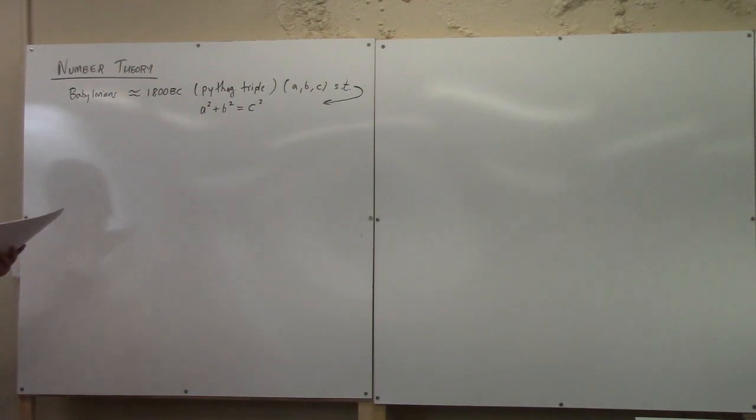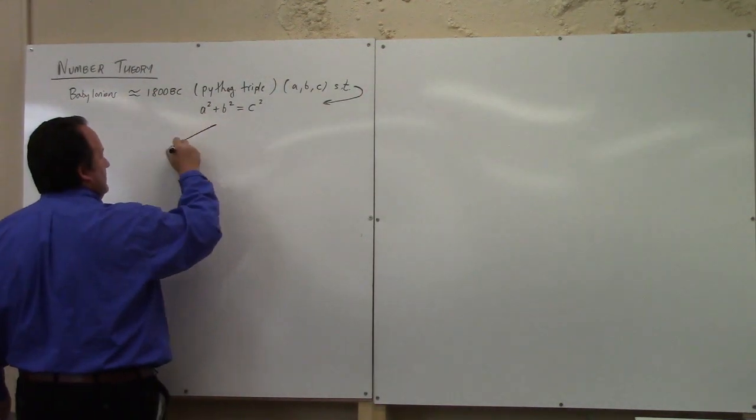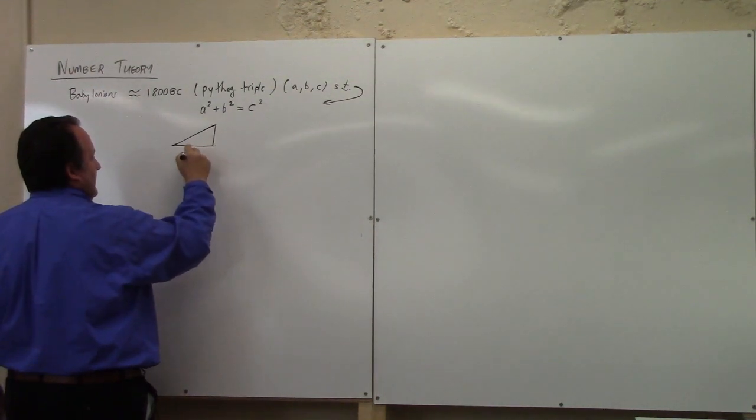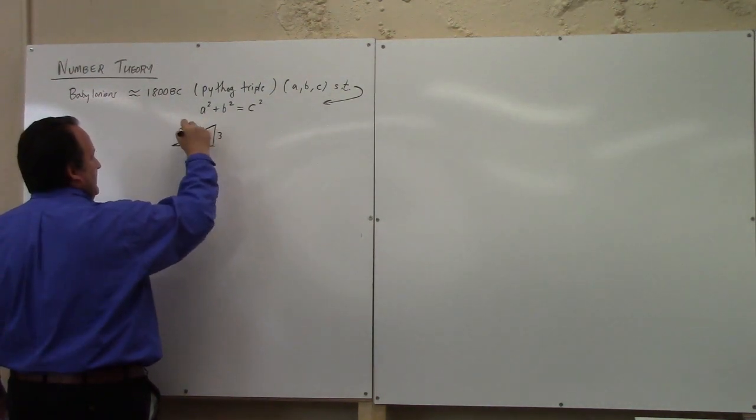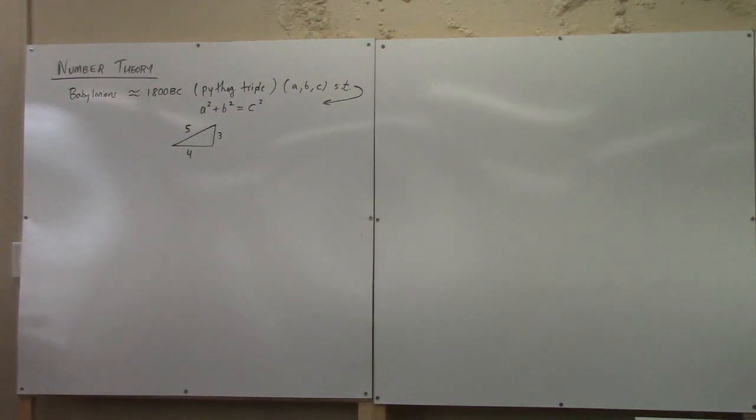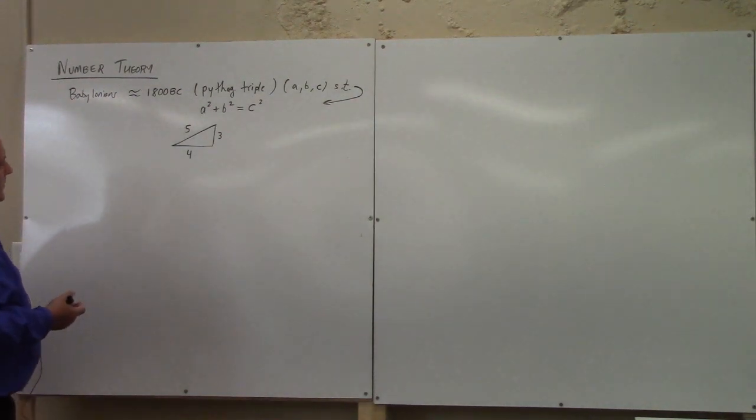So, for example, here's one. If I do four, I do three, I do five. There's a Pythagorean triple, right? Because four squared plus three squared is five squared. Do you know how to get another Pythagorean triple from this? 2MN, N squared minus M squared, M squared plus N squared.